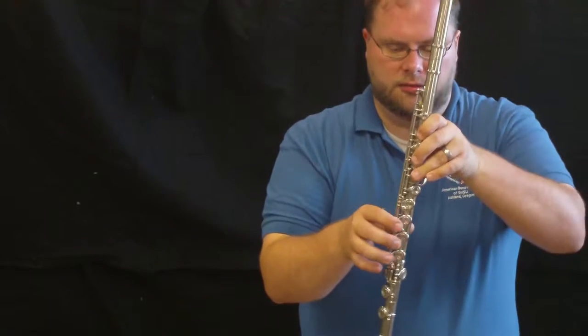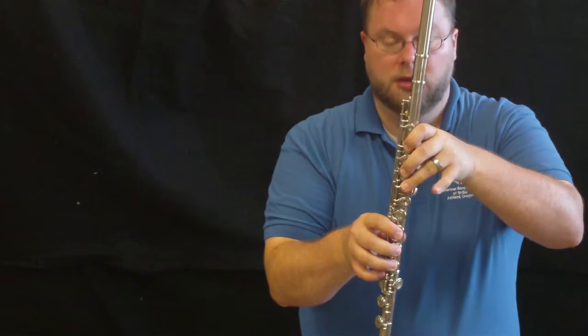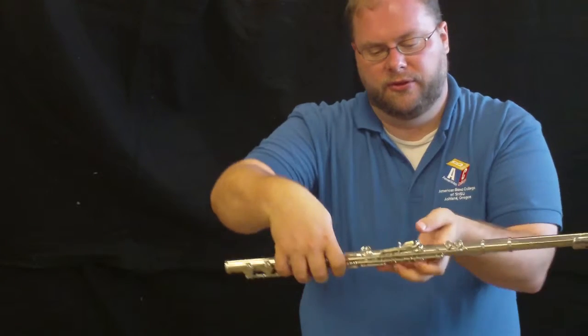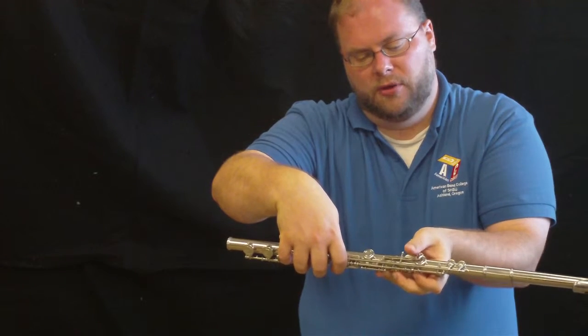So we have our right hand: pinky, three, two, one. Left hand: pinky, three, two, one. And on the back with our thumb, we're going to use our thumb on the flat key.